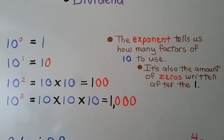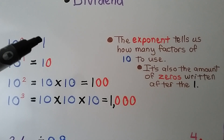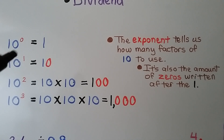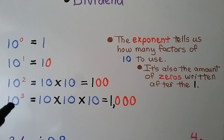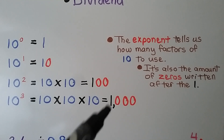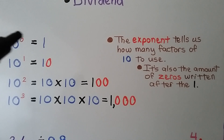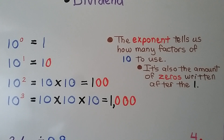The exponent — the little number — tells us how many factors of 10 to use. 10 to the 0 power equals 1 because we have 0 factors of 10. 10 to the first power means we just have one 10. 10 to the second power means we have two factors, 10 times 10, which is 100. And 10 to the third power means three factors of 10, which is 1,000. The exponent also tells us the number of zeros written after the 1. See the pattern?